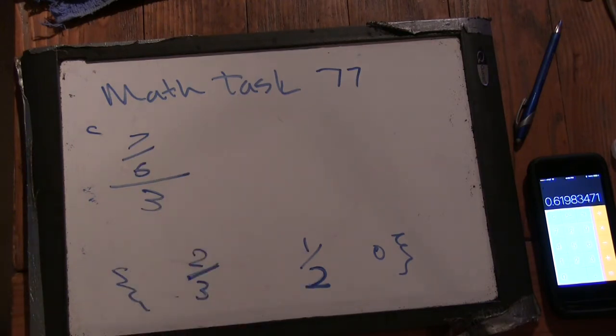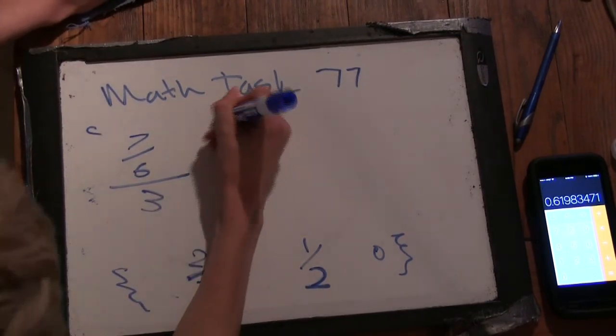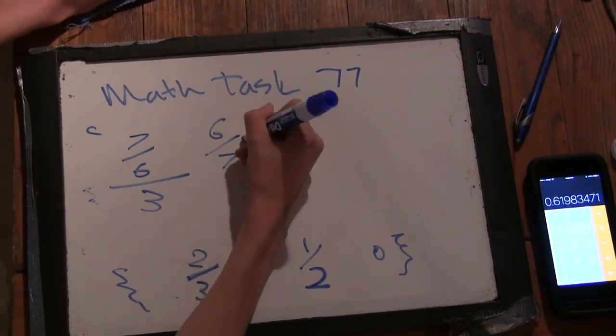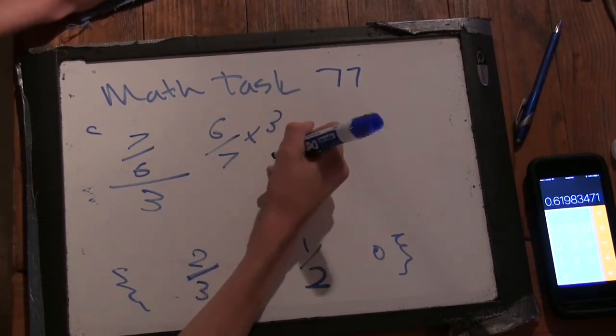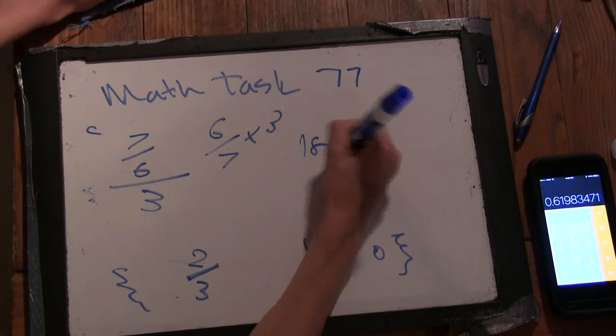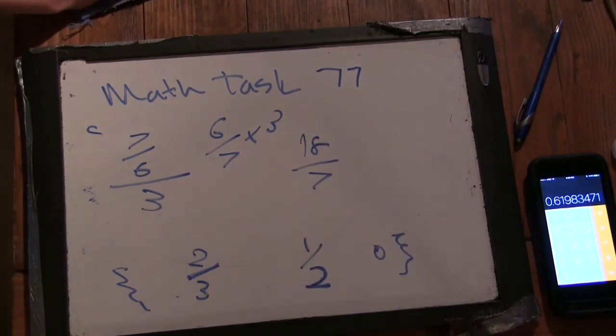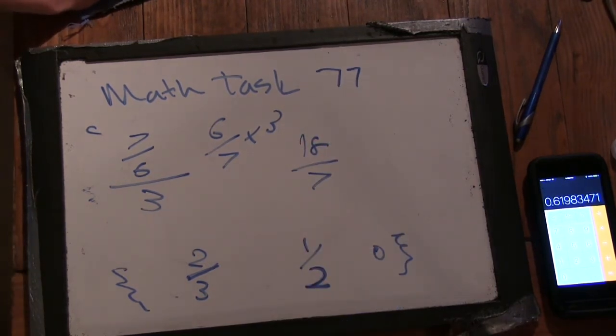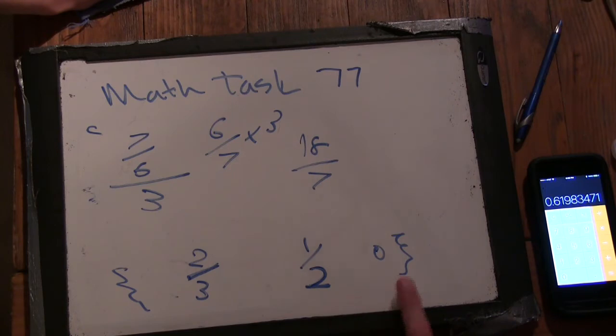Okay. Or 6 sevenths times 3. So that's 18 sevenths. Okay. Surprisingly, that's not a choice. But how do I know for sure that 18 sevenths cannot be the average of 2 thirds, 1 half, and 0?